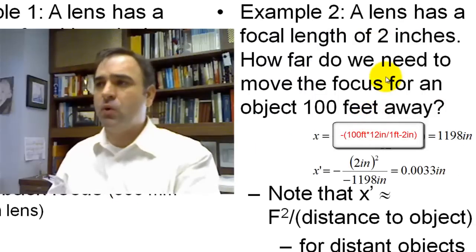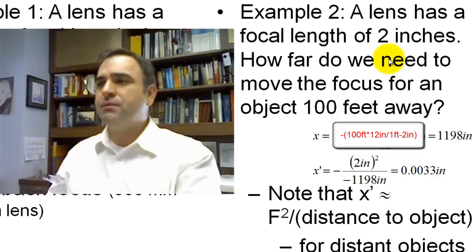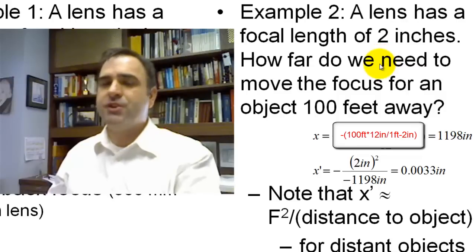Example 2, the lens has a focal length of 2 inches. How far do we need to move focus from the back focus for an object that's 100 feet away? So 100 feet away is pretty far, it's near collimation.